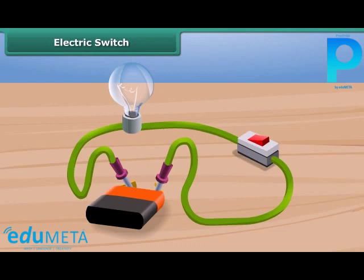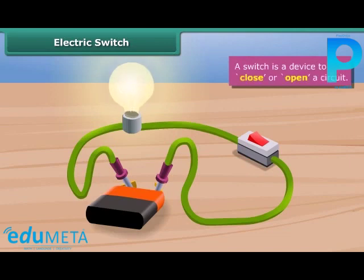The current does not flow through the circuit. When we press the other end of the strip on the switch, it gets connected to close the circuit. The current flows through the circuit and the bulb starts glowing. A switch is a device to close or open a circuit.